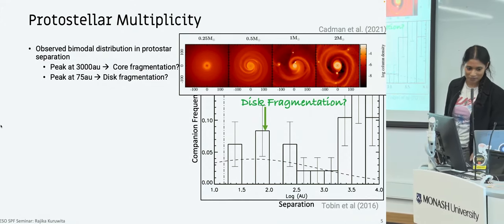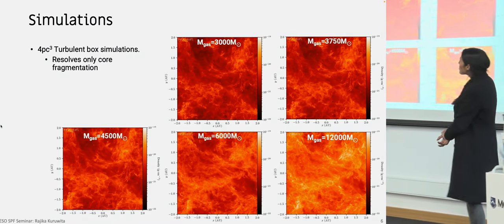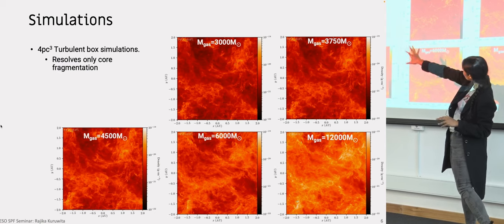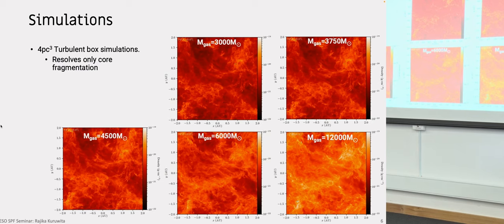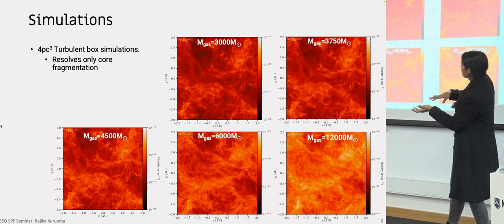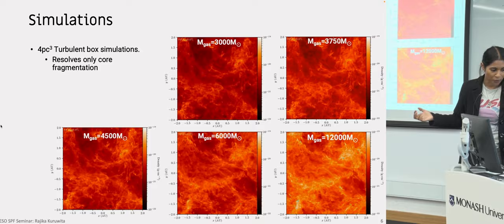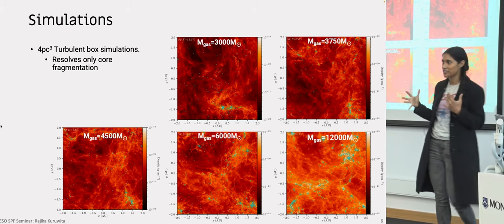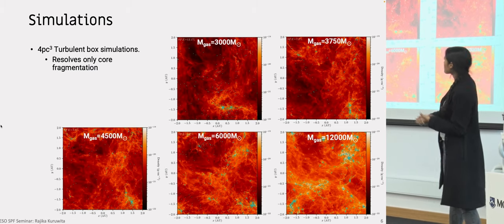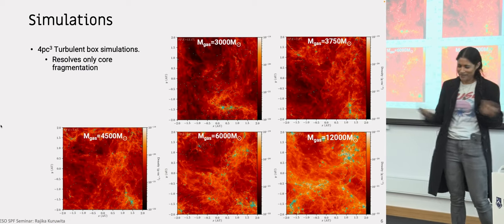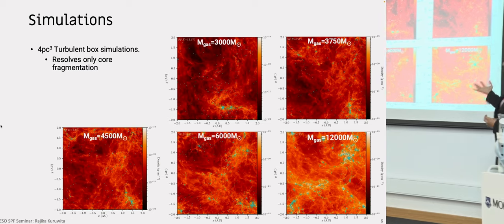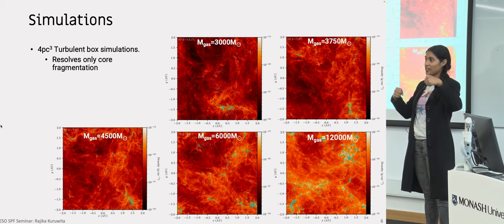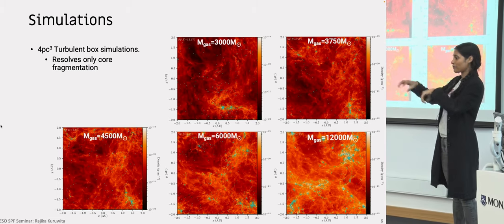This is what I was investigating in my first postdoc at the University of Copenhagen. We ran six cluster simulations — from 1,500 solar masses up to 12,000 solar masses — in a turbulent box with ideal MHD. We let these simulations run and form stars, shown as blue points. Each simulation was run until at least 5% star formation efficiency, meaning 5% of the gas ended up inside the stars. Then I went through the data and identified every single binary and multiple by looking at the potential energies and kinetic energies of the stars to find which ones were bound, including triples and quadruples.